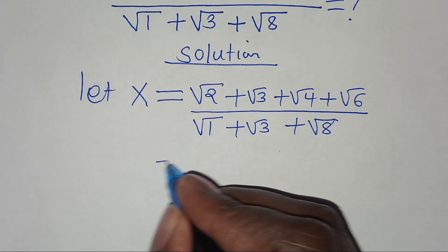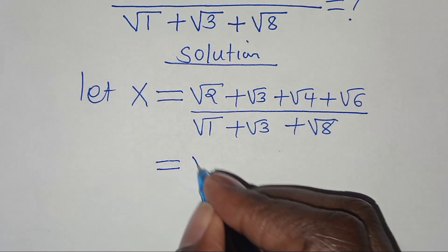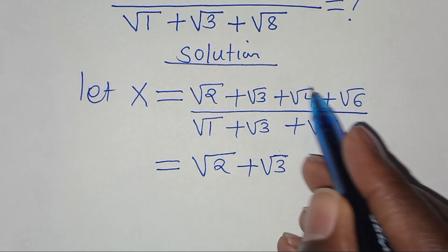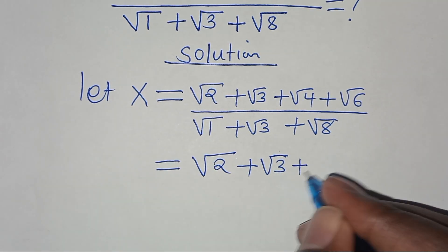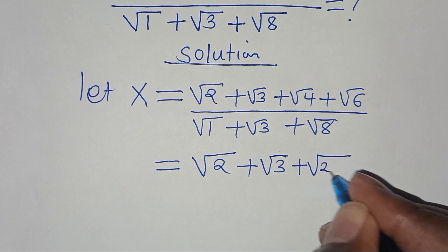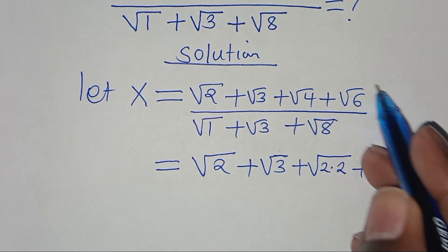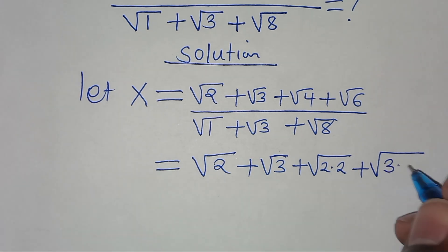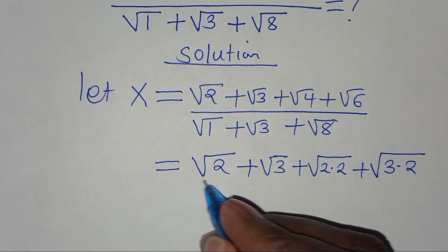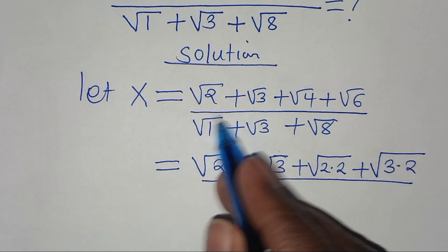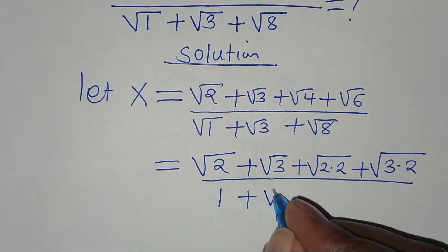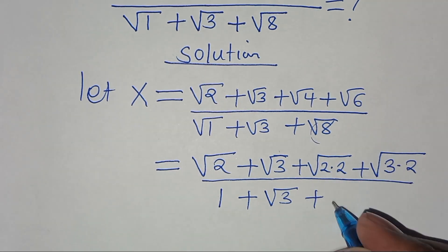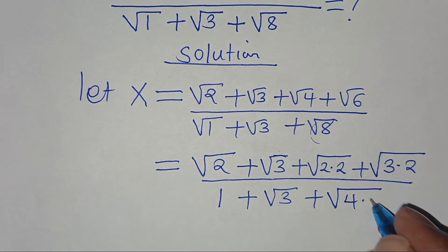The next step: in the numerator we have square root of 2 plus square root of 3, then we express 4 as square root of 2 times 2, plus square root of 6 as square root of 3 times 2. In the denominator: square root of 1 is 1, plus square root of 3, plus square root of 8 expressed as square root of 4 times 2.